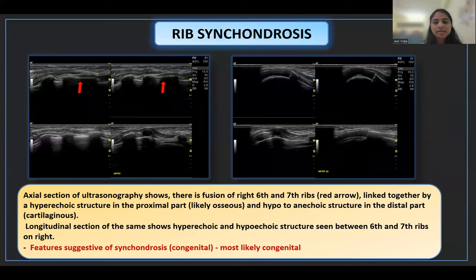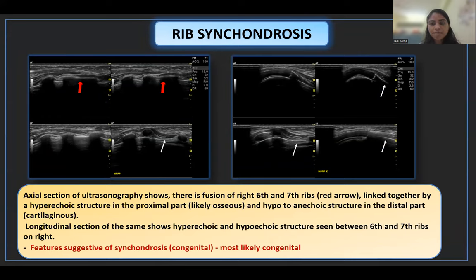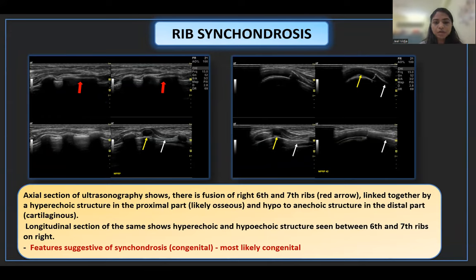In this case, the axial section of ultrasonography shows fusion of the right 6th and 7th ribs, indicated by the red arrow, linked together by a hyperechoic osseous structure in the proximal part and a hypoechoic structure between the 6th and 7th ribs. The longitudinal section shows both hyperechoic and hypoechoic structures between the 6th and 7th ribs on the right side — features suggestive of synchondrosis. This was an incidental finding on chest ultrasound, representing a case of congenital synchondrosis.